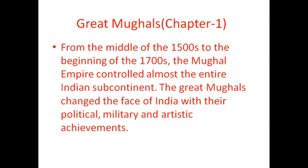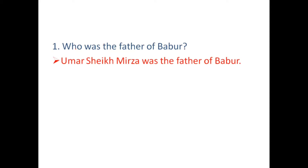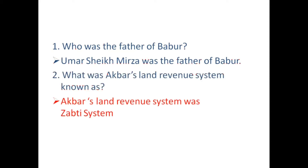From the middle of the 15th century to the beginning of the 17th century, the Mughal Empire came to cover almost the entire Indian subcontinent. The great Mughals changed the face of India with their political, military, and artistic achievements. Now some questions about the Mughal Empire: Who was the father of power? Babur was the father. What was Akbar's land revenue system known as? It was known as the Zabt system.